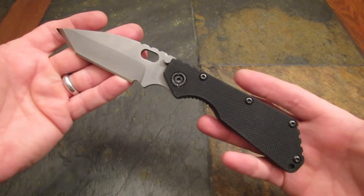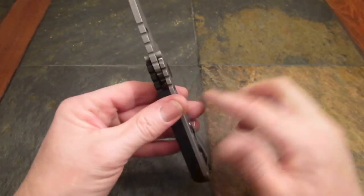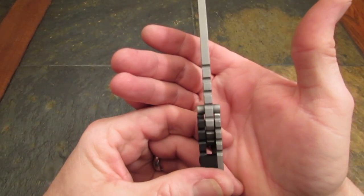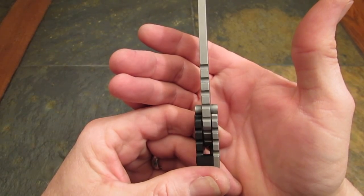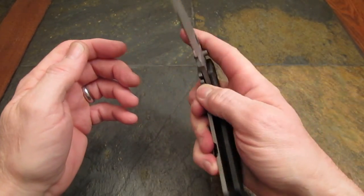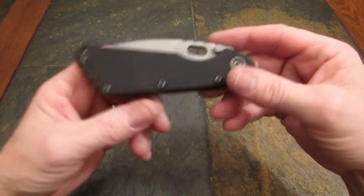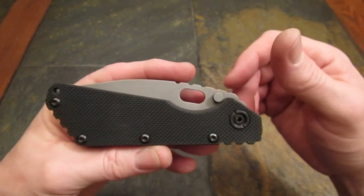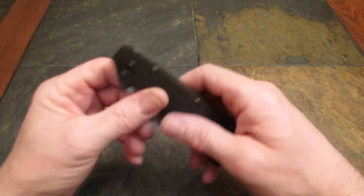Blade thickness on this beast of a tool is 0.190, a little more than three-sixteenths of an inch. Weight, well it is not a lightweight, is it? 6.5 ounces. That's a lot of ounces.